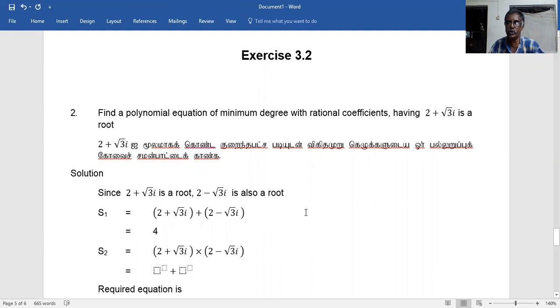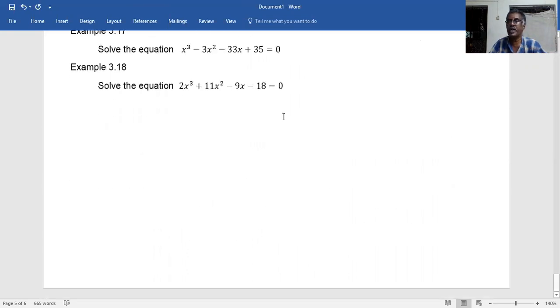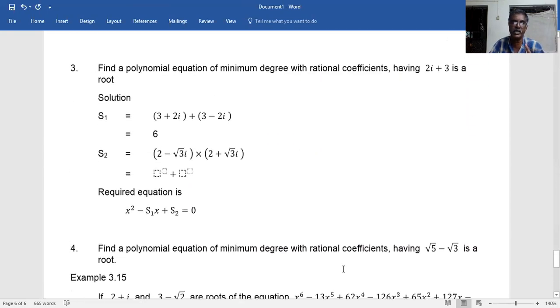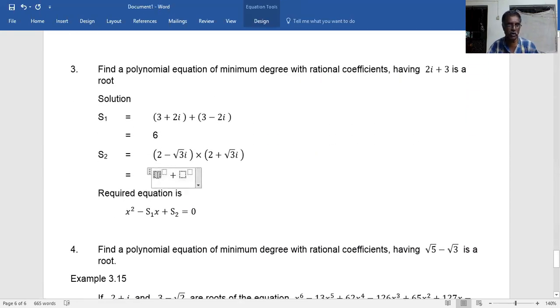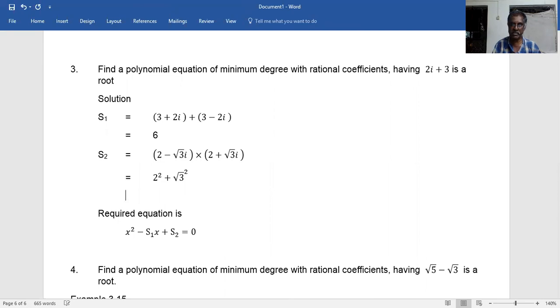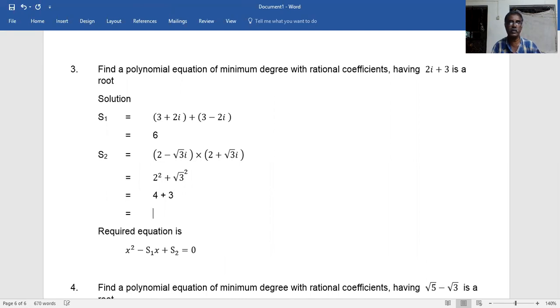For S2, we'll apply the formula (a + b)(a - b) = a² + b². So S2 equals 2² + (√3)², which equals 4 + 3, which equals 7.